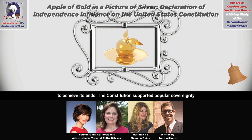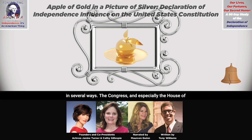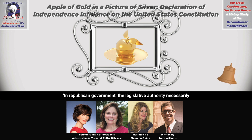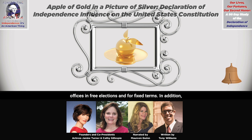The Constitution supported popular sovereignty in several ways. The Congress, and especially the House of Representatives, was closest to the people and represented them. As James Madison wrote in Federalist No. 51: 'In Republican government, the legislative authority necessarily predominates.' The people, directly or indirectly, elected several offices in free elections and for fixed terms.